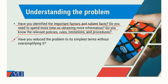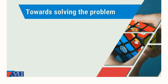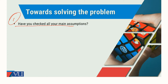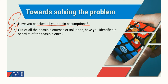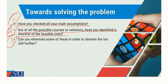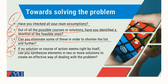The second important point about understanding the problem: have you reduced the problem to its simplest terms without over-simplifying it? When we talk about solving the problem, first, have you checked all your main assumptions? Second, out of all possible courses or solutions, have you identified a shortlist of the feasible ones? Third, can you eliminate some of these to shorten the list further? Fourth, if no solution seems right by itself, can you synthesize elements of two or more solutions to create an effective way of dealing with the problem?